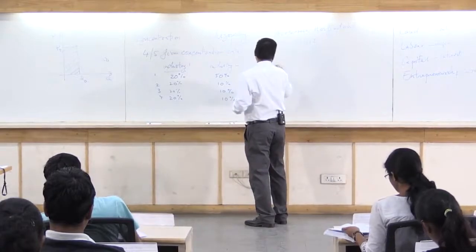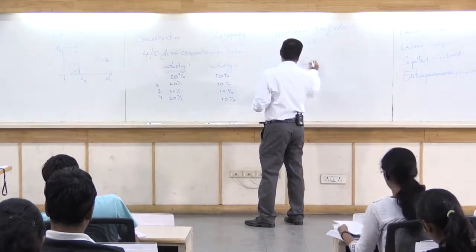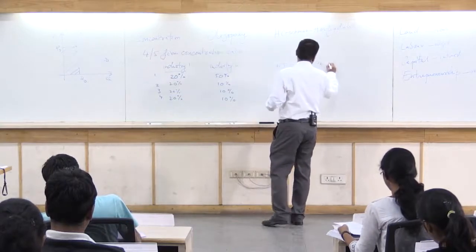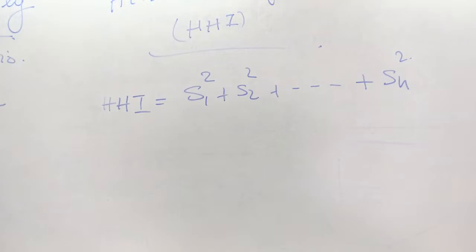HHI is equal to S1 square plus S2 square plus SN square. The sum of the squares of the market shares of all the firms which are there in the industry.